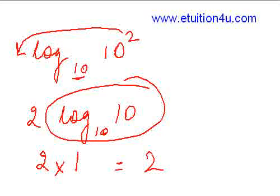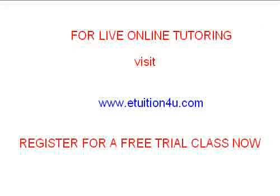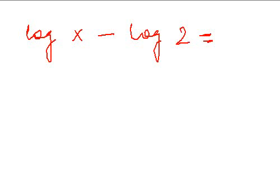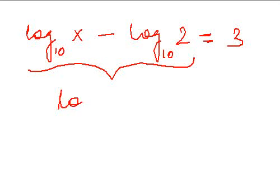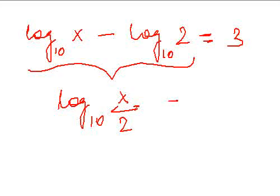Now let's take another question. Let's say we have log x minus log 2 is equal to 3, the base is 10. Now what can we do for this? We can write this side as log x over 2 to the base 10, this is equal to 3. Now how do we find x from here? How do we get rid of log?